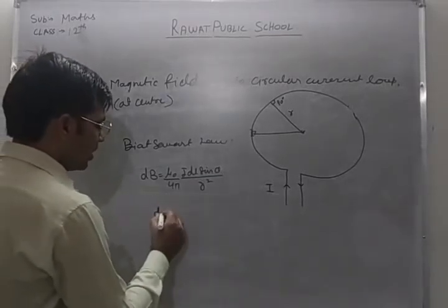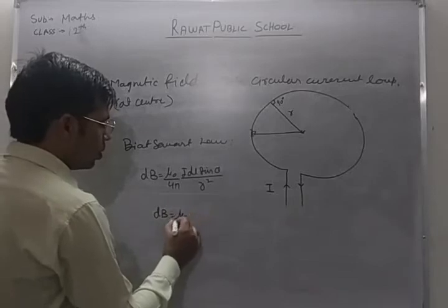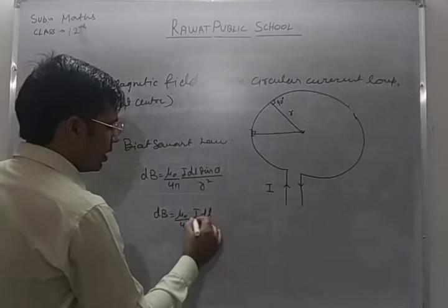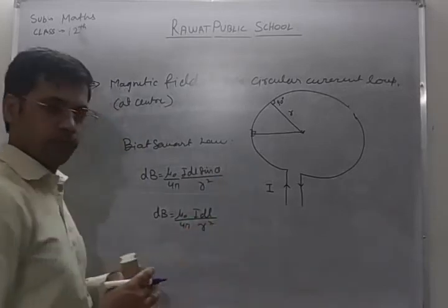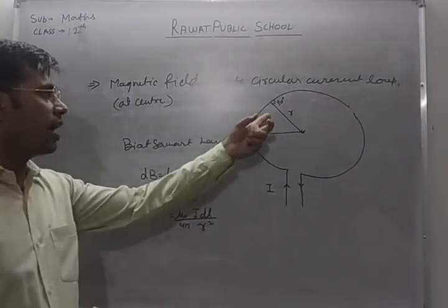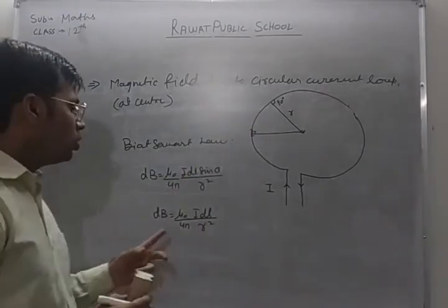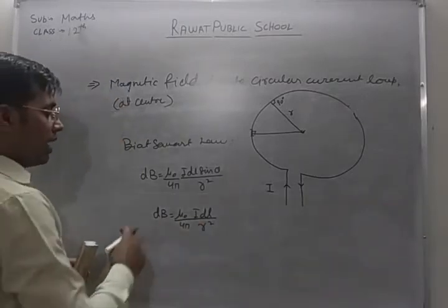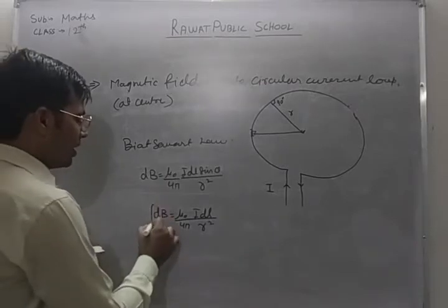So we can write the expression for the small magnetic field element as: dB = μ₀/4π · I·dl / r². This is the magnetic field due to a small current element, with the angle being 90 degrees. Now we need to calculate the total magnetic field for the entire loop, so we will integrate this expression.